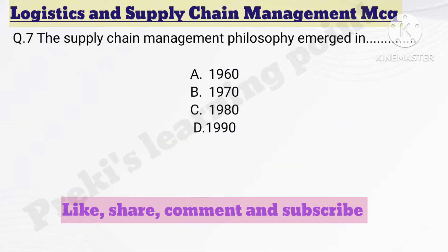Question number 7. Supply chain management philosophy emerged in — Option A: 1960. Option B: 1970. Option C: 1980. Option D: 1990. The correct answer is option C — 1980.